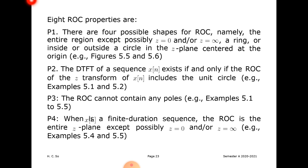Property P2: the DTFT of a sequence X(n) exists if and only if the ROC of the Z-transform of X(n) includes the unit circle. Property P3: the ROC cannot contain any poles. Property P4: when X(n) is a finite duration sequence, the ROC is the entire Z-plane except possibly z equal to zero and z equal to infinity.